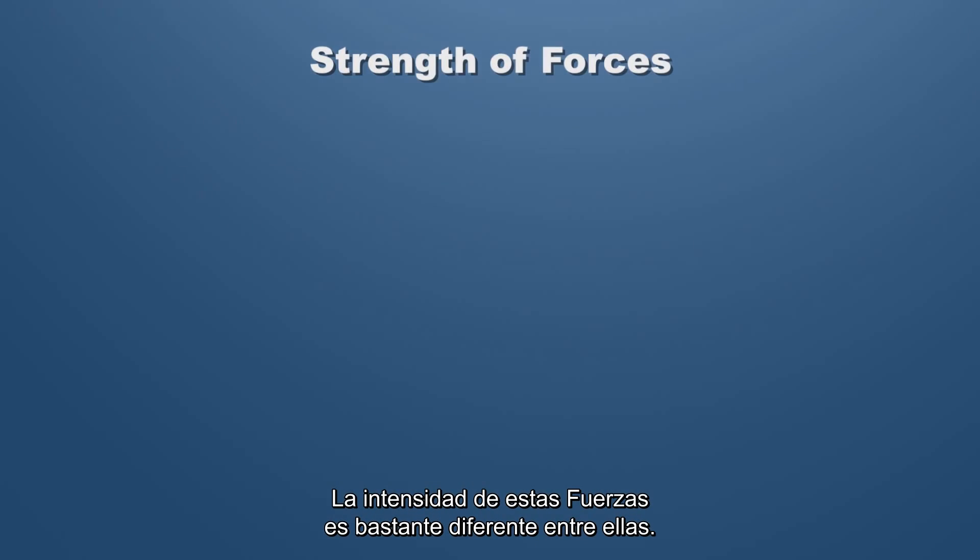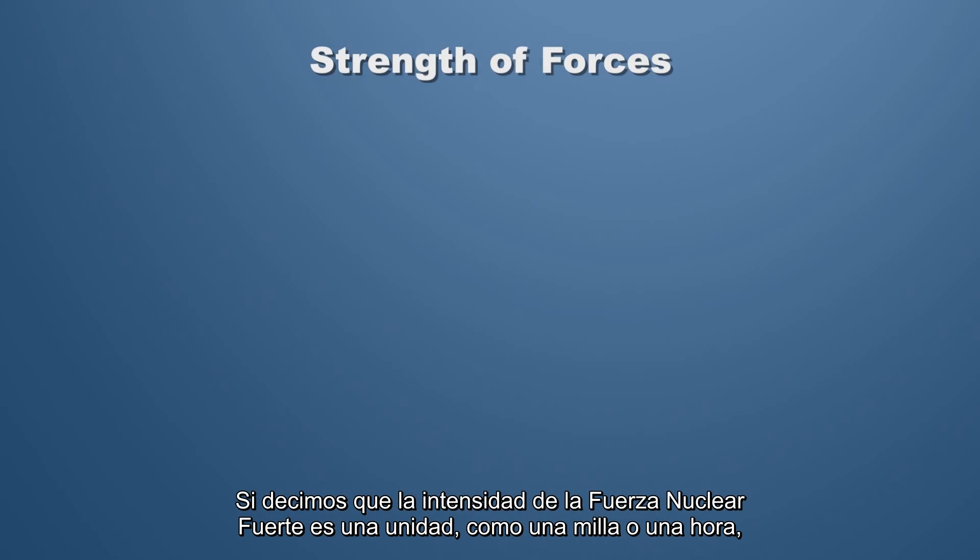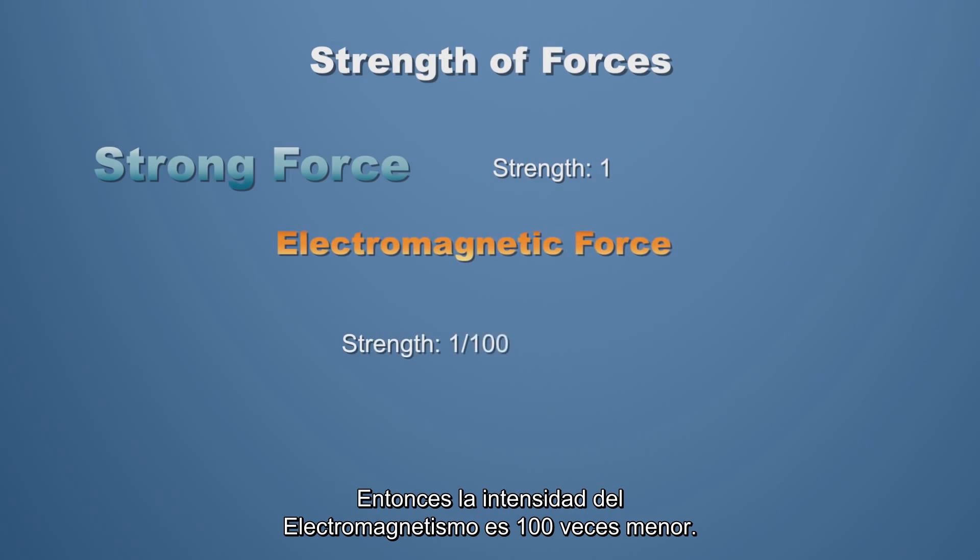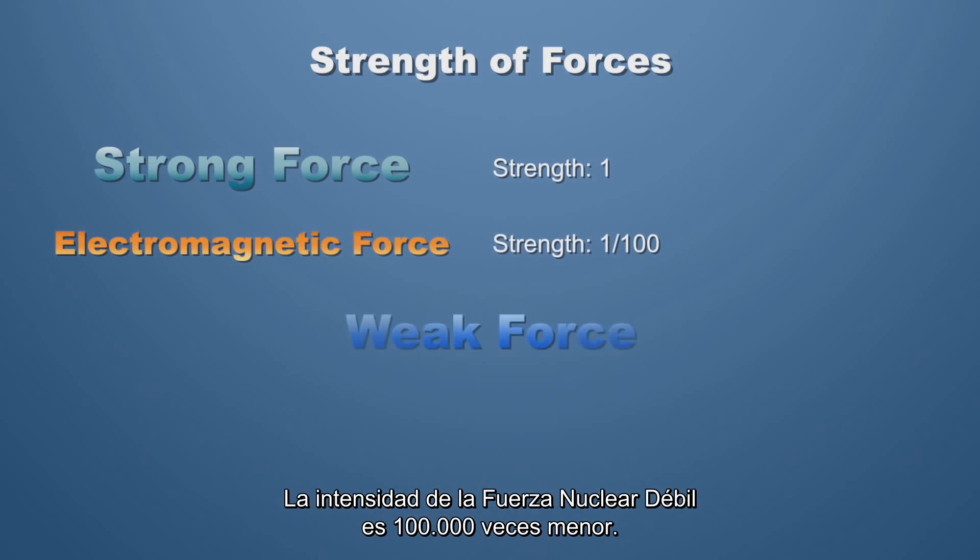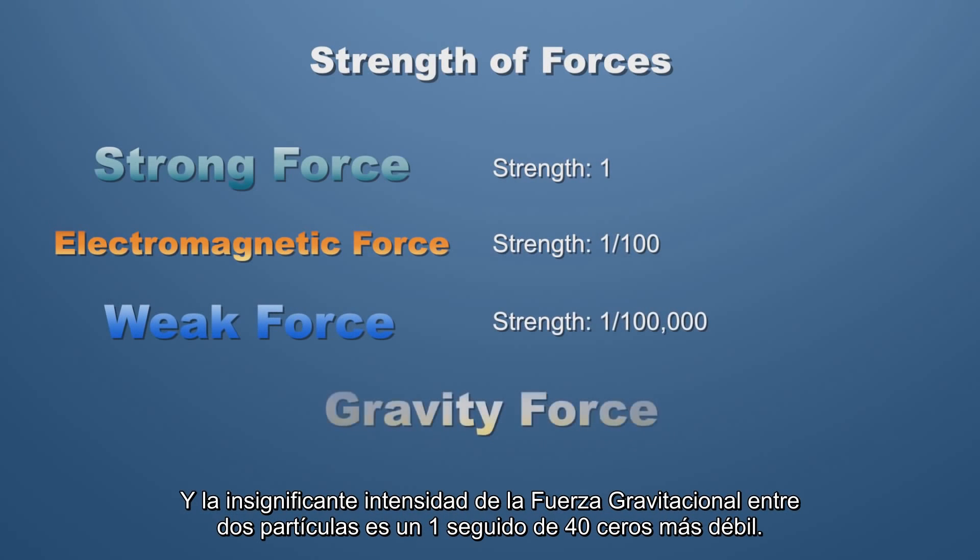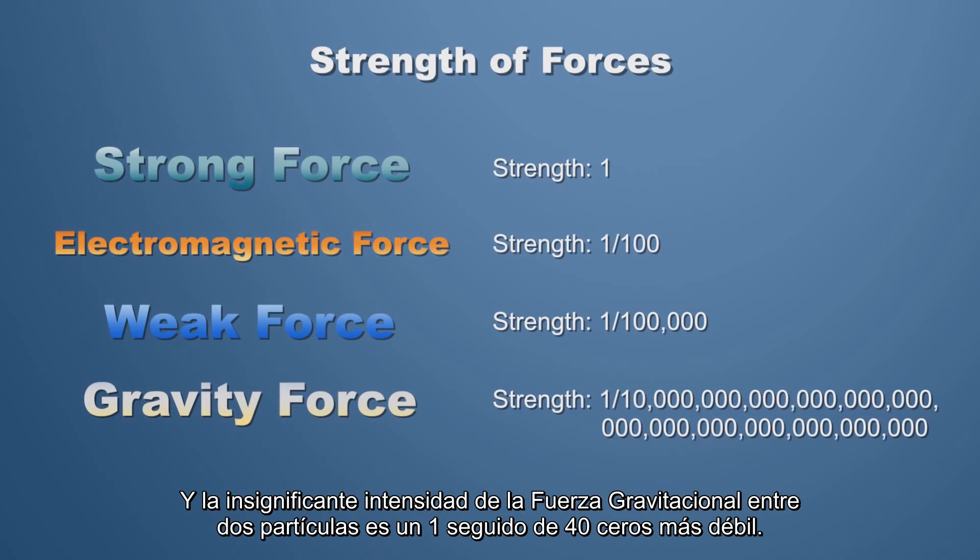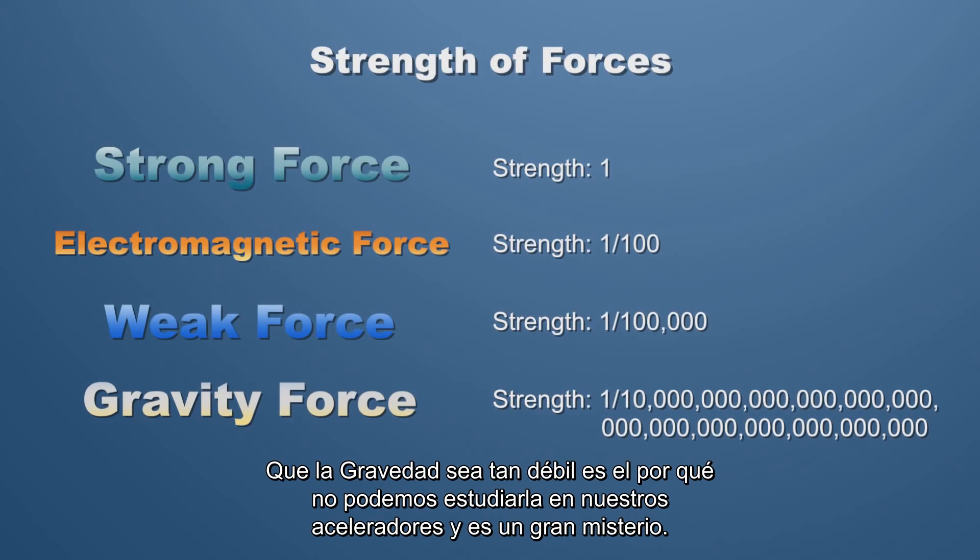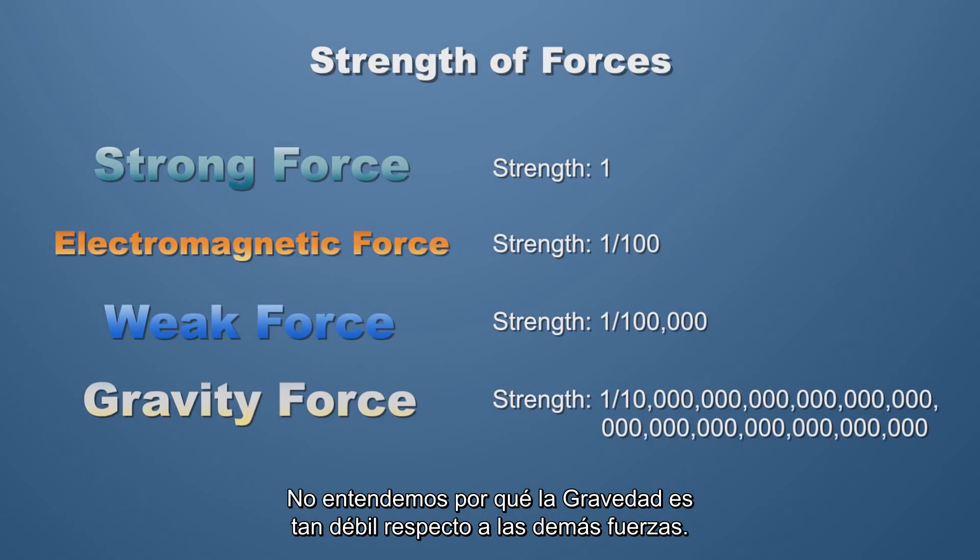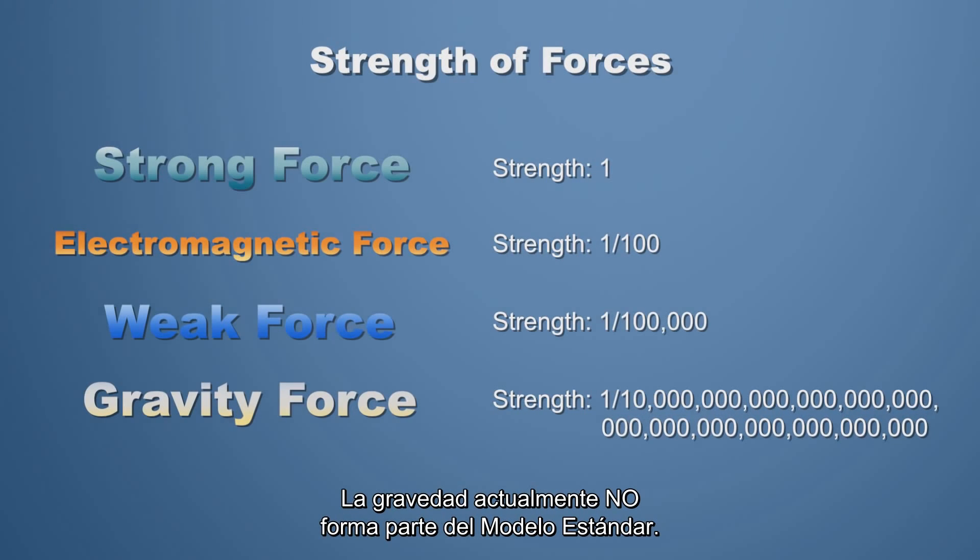The strength of the forces is really quite different. If we call the strength of the strong force to be one unit of strength, like one mile or one hour, then the strength of the electromagnetic force is about 100 times smaller. The strength of the weak force is about 100,000 times smaller. And the strength of the puny force of gravity between two particles is a one followed by 40 zeros smaller. This weakness of gravity is why we can't study it at particle accelerators, and it's a huge mystery. We don't understand why gravity is so much weaker than the other forces. Gravity is currently not part of the standard model.